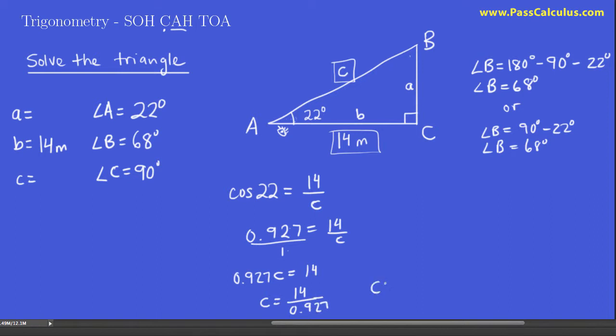So c is 14 divided by that quantity. And therefore, c is equal to what? Well, let's see, 14 divided by 0.927, let's say 15.1. So that's the length of side c, 15.1.